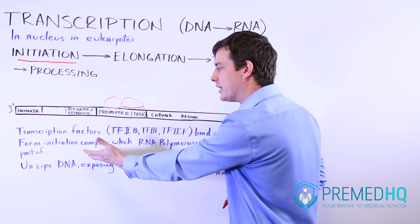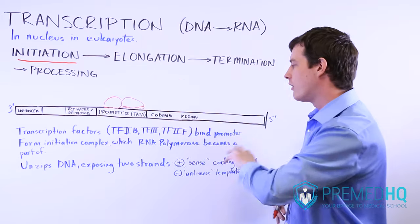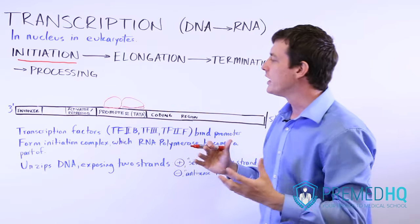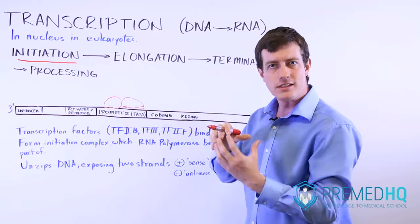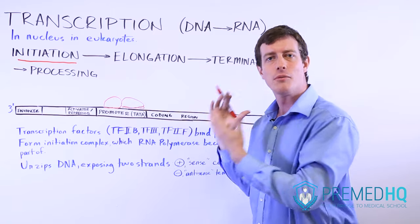And then the RNA polymerase comes along and it incorporates into that complex and unzips the double-stranded DNA, thus forming a bubble. There are some other things to be aware of.